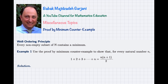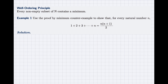Let me describe this method by solving two examples. If you remember when you were studying mathematical induction, there is a high chance that the first example you encountered was to prove this equality. We want to prove that the sum of the natural numbers from 1 up to n is n times n plus 1 divided by 2. Now I want to use this method of proof — minimum counterexample — to prove the same problem.